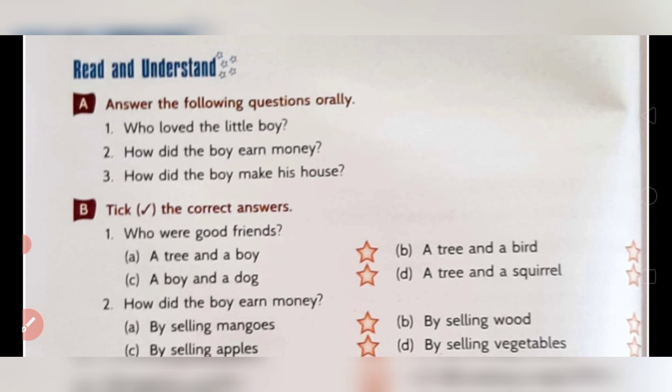Before starting the exercises, keep your pencil with yourself. In question number A, you have to answer the following questions orally. First: who loved the little boy? The answer is the tree loved the little boy. Second: how did the boy earn money? The boy earned money by selling the apples from the tree.